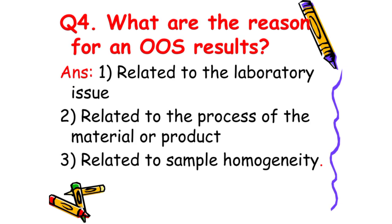Next: What are the reasons for an OOS result? The answer is: there are basically three reasons for an OOS result. Number one is related to a laboratory issue. Number two is related to the process of the material or product. And number three is related to sample homogeneity.